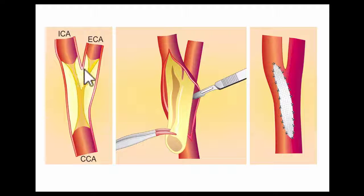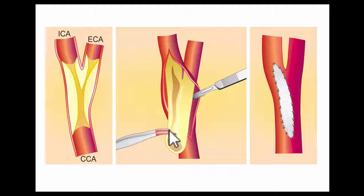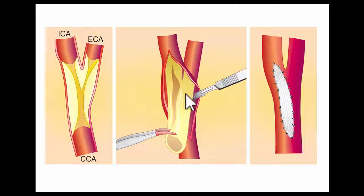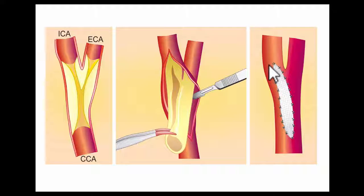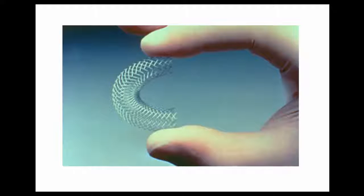Endarterectomy means repair of an artery. There is plaque buildup at the carotid bifurcation, and the surgeons open up the carotid artery, then scoop out all the plaque. While the surgery is ongoing, the artery is blocked so no debris can enter the brain and cause a mini-stroke. Once all plaque and debris are removed, a patch is applied to expand the size of the artery and is sutured in place. The surgery takes about one to two hours, and most patients spend no more than one to three days in the hospital.